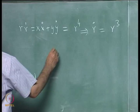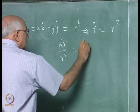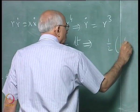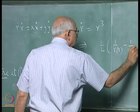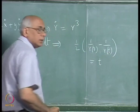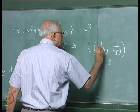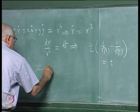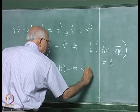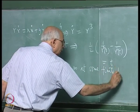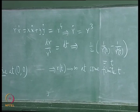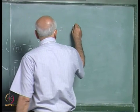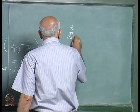This immediately says, since r can only take on non-negative values, as soon as you have a finite r₀ which is non-zero, r increases and keeps increasing indefinitely. We can also find how it increases as a function of time: dr over r-cubed equals dt, which implies one-half times (1/r₀² minus 1/r(t)²) equals t. Solving for r(t), we see that r(t) tends to infinity at some finite time.